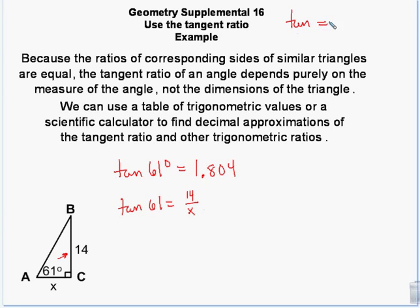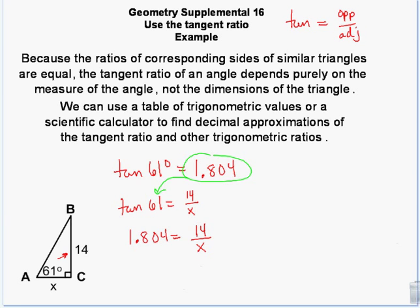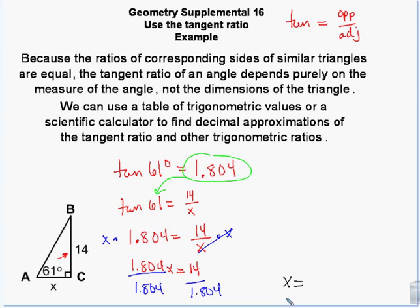We know tangent of 61 equals opposite over adjacent, which is 14 over x. So 1.804 equals 14 divided by x. Multiply both sides by x — those cancel — giving 1.804x equals 14. Then divide both sides by 1.804, and x equals 7.76.